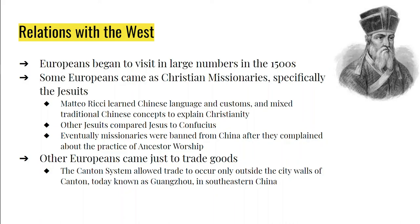Some Europeans came to China simply to trade and make money — the Dutch and English specifically. Trading between Europeans and Chinese could only be done at the city of Canton, today known as Guangzhou, and only outside the city walls; any other trading was illegal. The British East India Trading Company was probably the most famous group of traders, trading for tea and silk and paying in gold and silver.